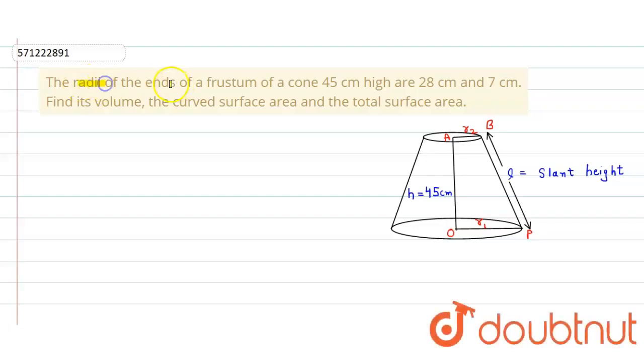In the given question, the radii of the ends of the frustum of a cone 45 cm high are 28 cm and 7 cm. We have to find its volume, curved surface area, and the total surface area.